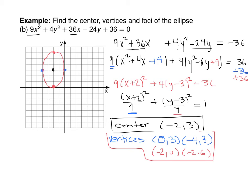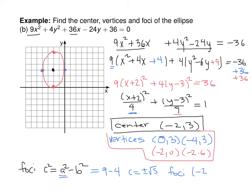Because the up-and-down axis is longer than the side-to-side axis, the foci lie on the vertical axis. Using c² = a² minus b² = 9 minus 4 = 5, we get c = ±√5. The foci are √5 units above and below the center, with coordinates (−2, 3 ± √5).